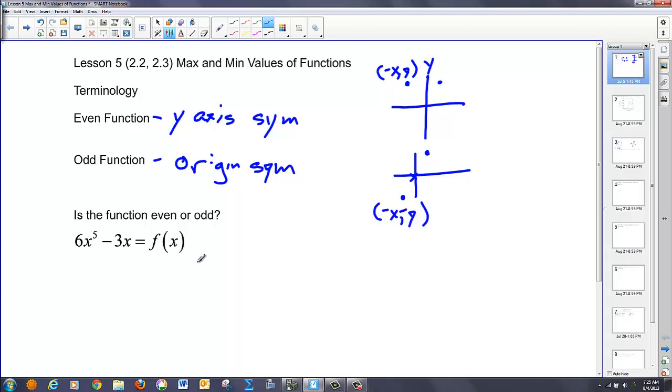So let's check both of those. Let's go even first. We're going to take f of x and make a substitution of the opposite of x for every x that we see, and keep y the same. This is negative 6x to the fifth and a positive 3x. We want to know if that is the same as our original function, which clearly it's not. So no, it's not even.